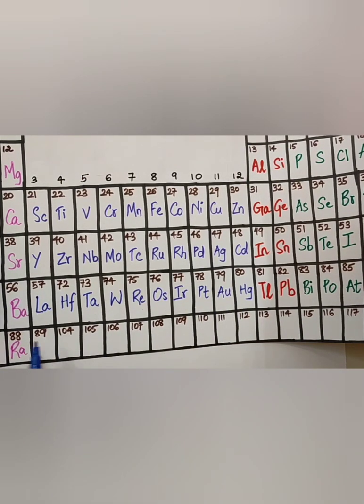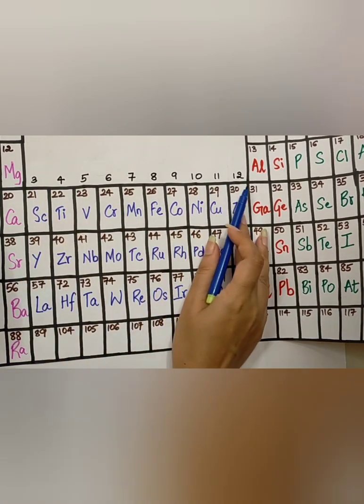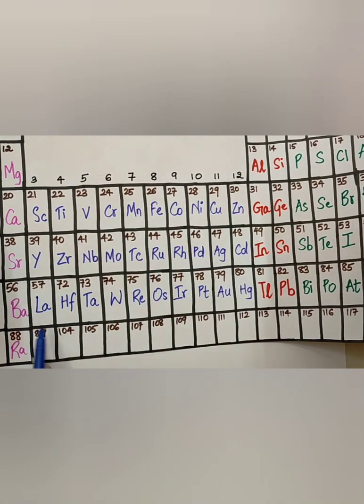Now, we are going to talk about the 7th period, again, starting from the 3rd to 12th group. If you have noticed here also, from 89, I have directly jumped to 104. The in between elements, we will deal afterwards. So, now, let us see the mnemonic for the 7th period.